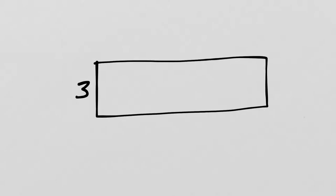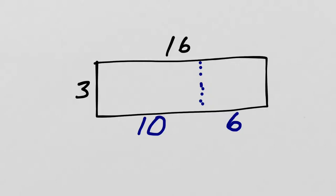We can use this idea of adding rectangles together to help us solve complicated problems. Let's draw a nice long rectangle — say this is 3 and that's 16. Now, we have not practiced 16s, but we're going to look at a special strategy for area here. We can take this big rectangle and break it into two smaller ones, taking 10 from that 16 on one side and 6 on the other, because 10 plus 6 equals 16.